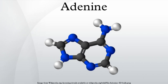Structure: Adenine forms several tautomers, compounds that can be rapidly interconverted and are often considered equivalent. However, in isolated conditions — that is, in an inert gas matrix and in the gas phase — mainly the 9H-adenine tautomer is found.